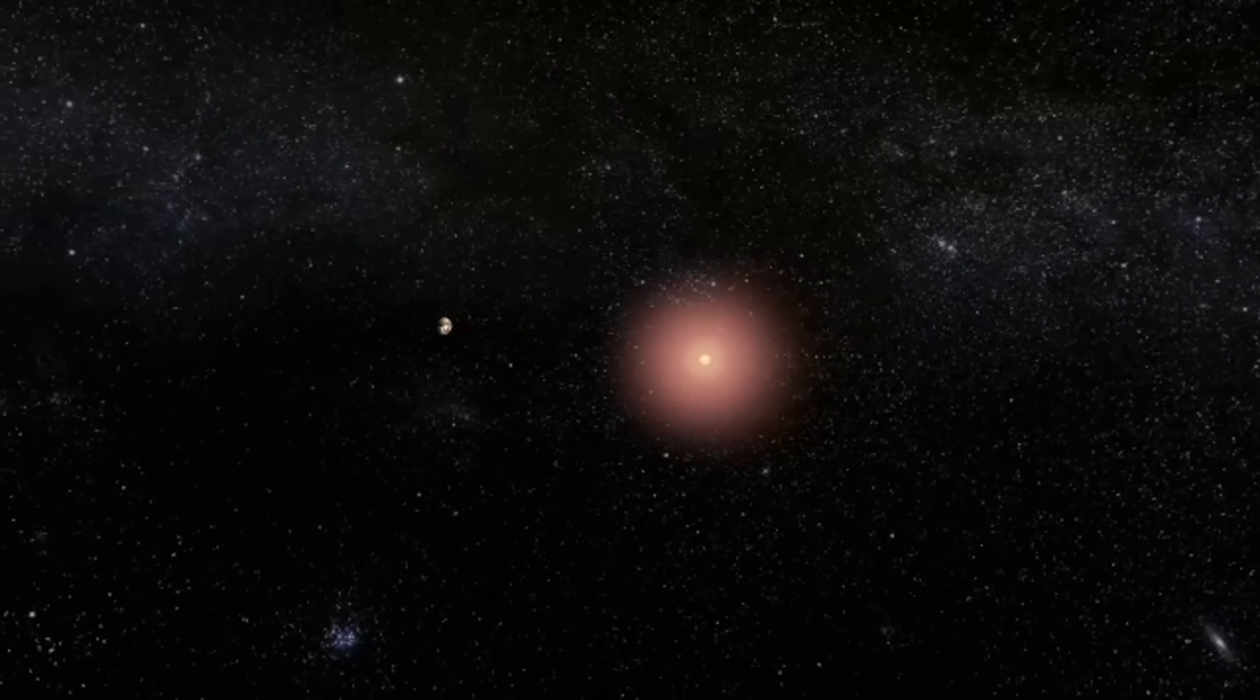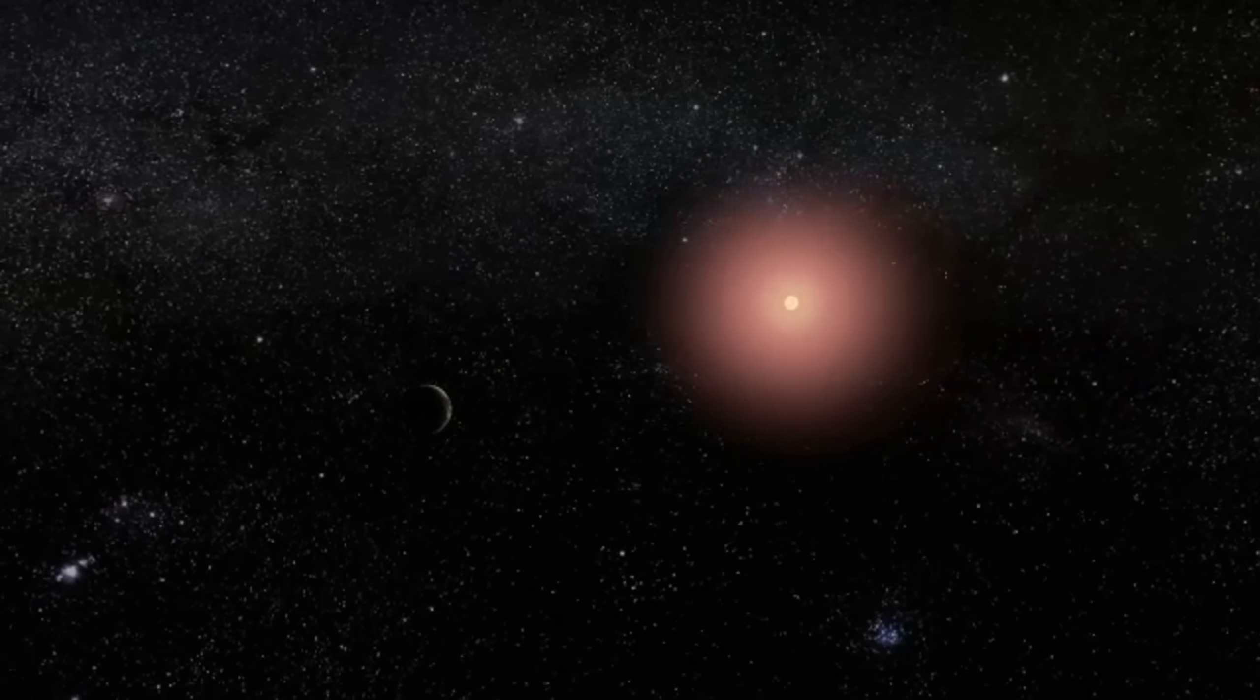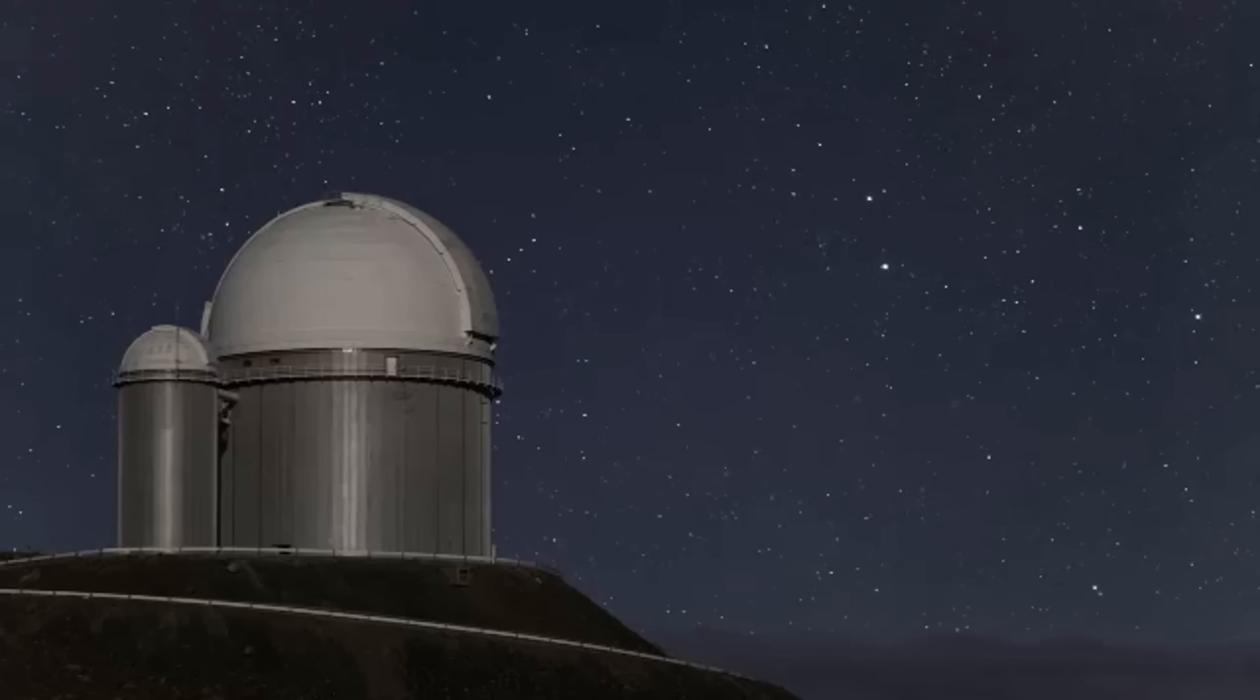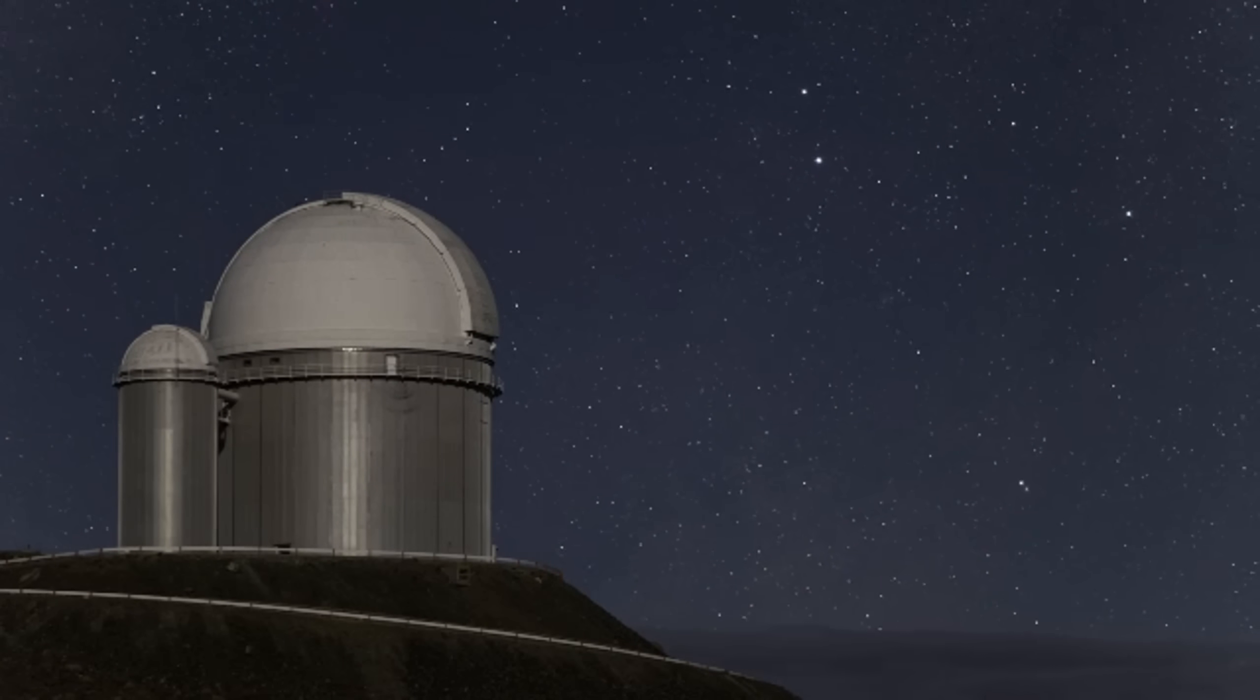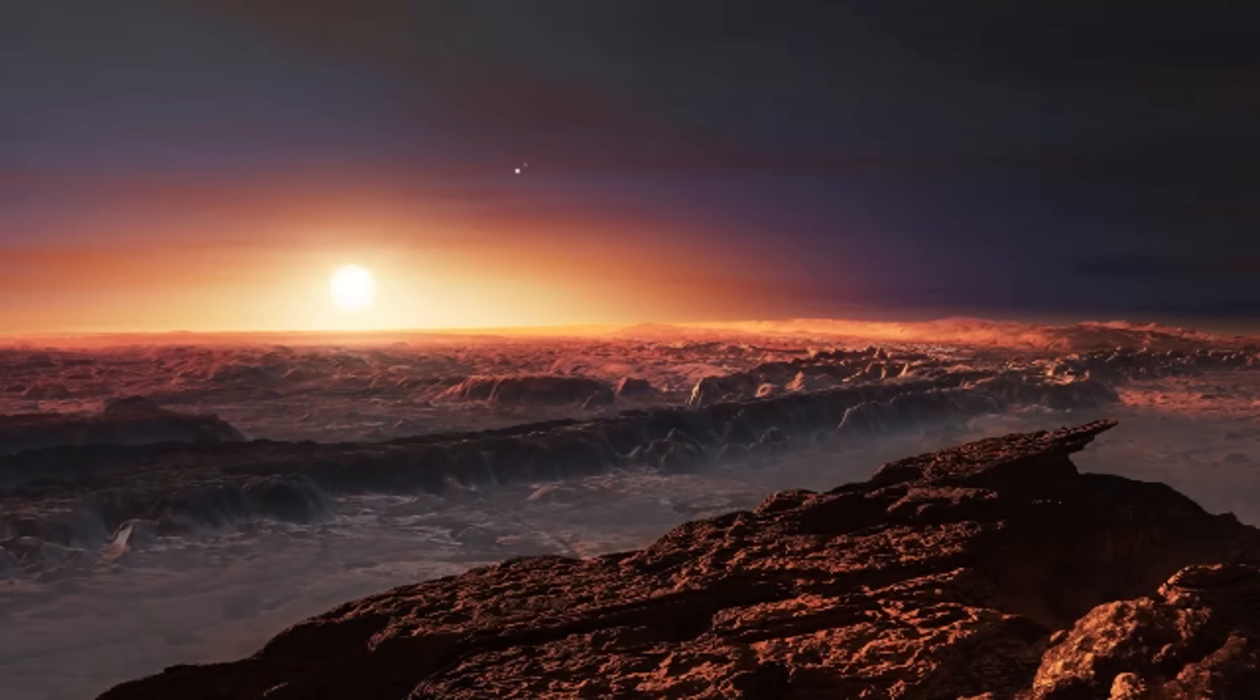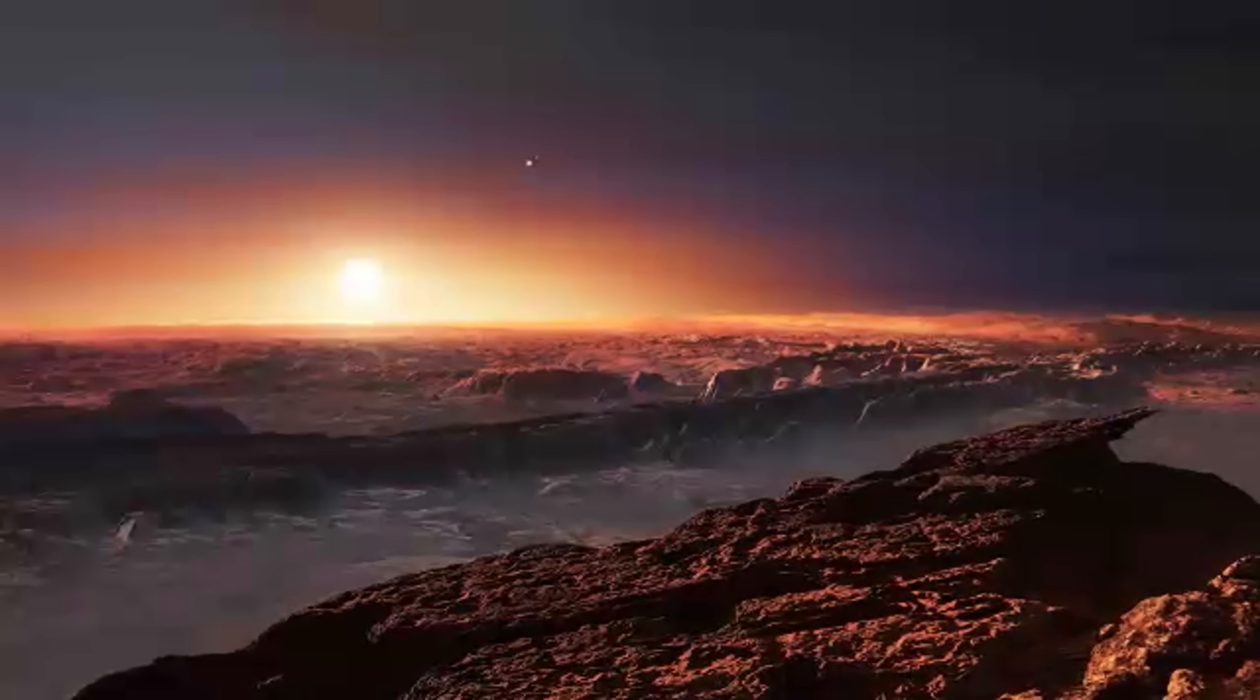There are still more mysteries to solve. Proxima Centauri B is very similar in size to Earth, with a mass of 1.17 Earth masses. It orbits its star in only 11.2 days, in contrast to our Earth's year-long orbit around our Sun. That means Proxima Centauri B is a lot closer to its star than Earth is to the Sun. But because the star is a red dwarf, much smaller and cooler than our Sun, its orbit is indeed within the habitable zone of Proxima Centauri.